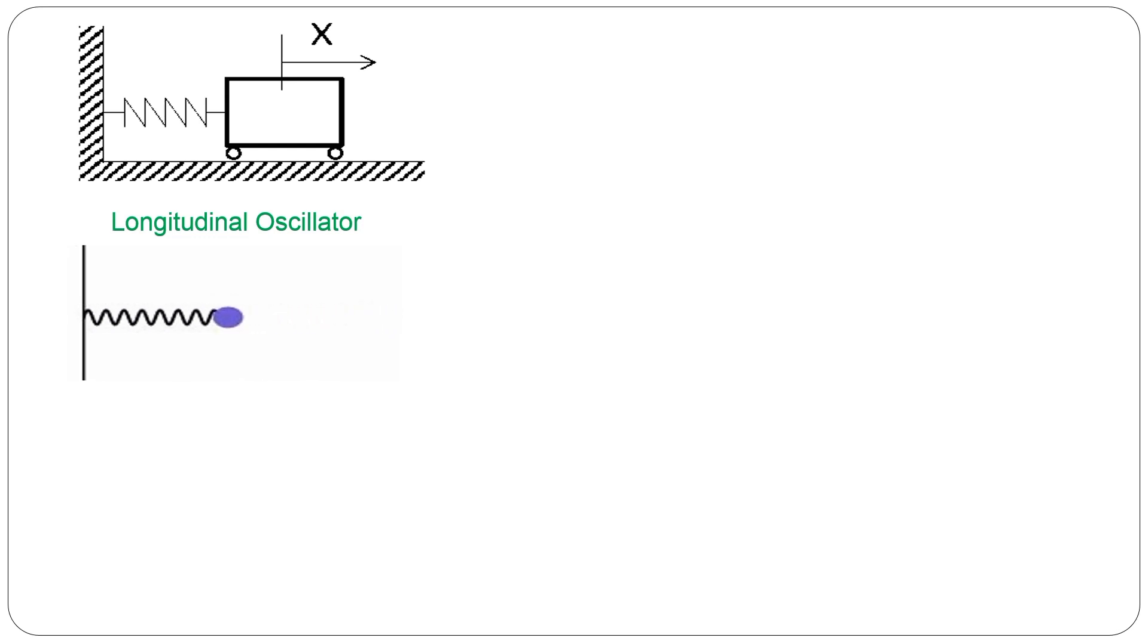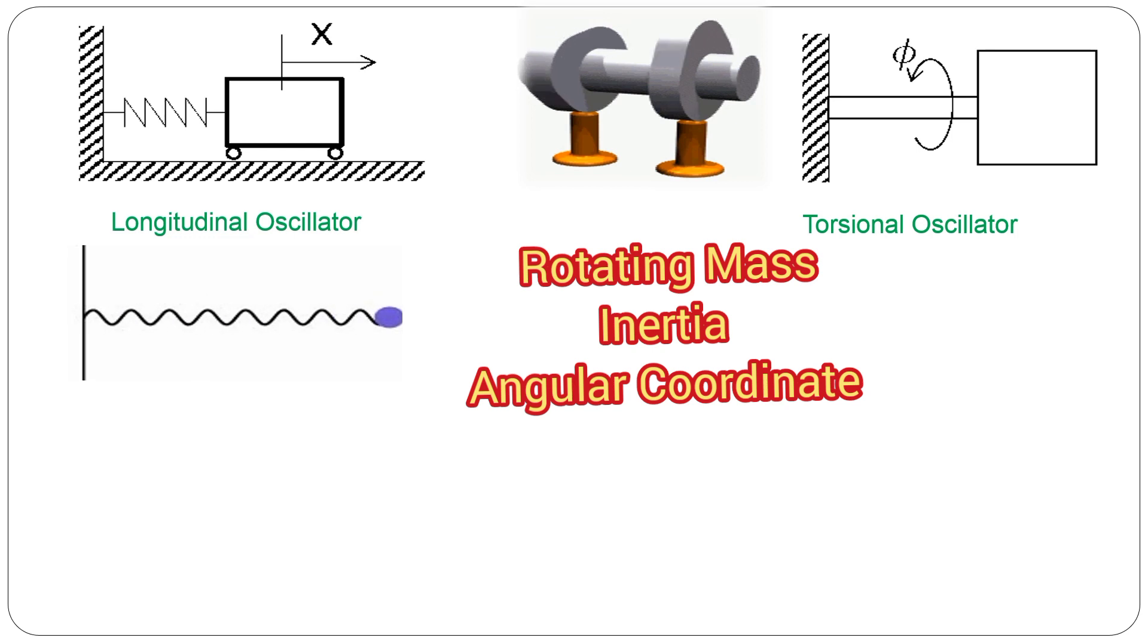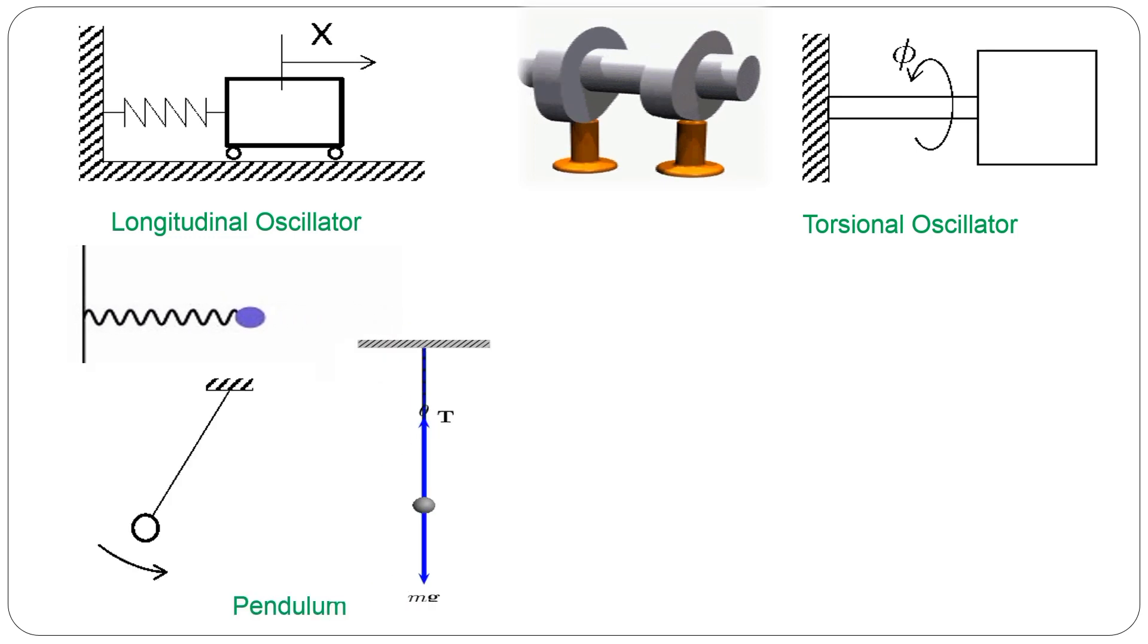We have this longitudinal oscillator with coordinate x that we can look at, and we can also see that there is a torsional equivalent, which is the so-called torsional oscillator. In this case, we are no longer talking about the mass, but about the mass that is rotating. So we are talking about inertia, and we are talking about a different coordinate, which is angular coordinate denoted by Greek letter phi.